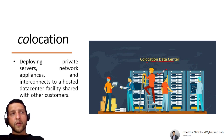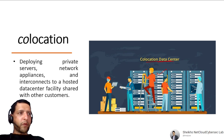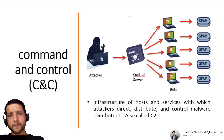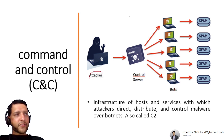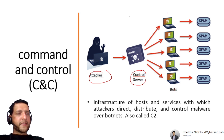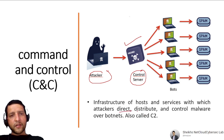Co-location Data Center involves deploying private servers, network appliances, and interconnects to a hosted data center facility shared with other customers. A third party manages cooling, security, hardening, and other infrastructure. Command and Control (C2) is the infrastructure of hosts and servers through which an attacker directs, distributes, and controls malware or botnets — the attacker controls zombie bots through this C2 center.